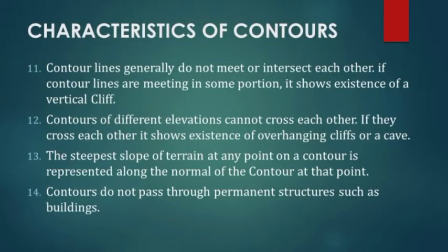Characteristic 13: the steepest slope of terrain at any point on a contour is represented along the normal to the contour at that point. If you take a point and want to find the steepest direction from it, it will be the direction normal to the contour line passing through that point. Characteristic 14: no contour lines will be passing through permanent structures such as buildings, as it is too tedious and unnecessary to work on contour maps within a building or structure.